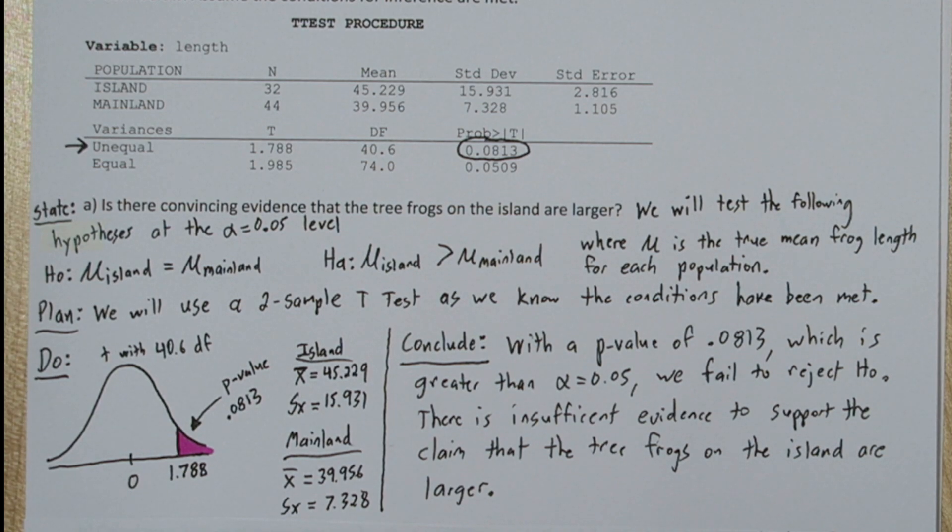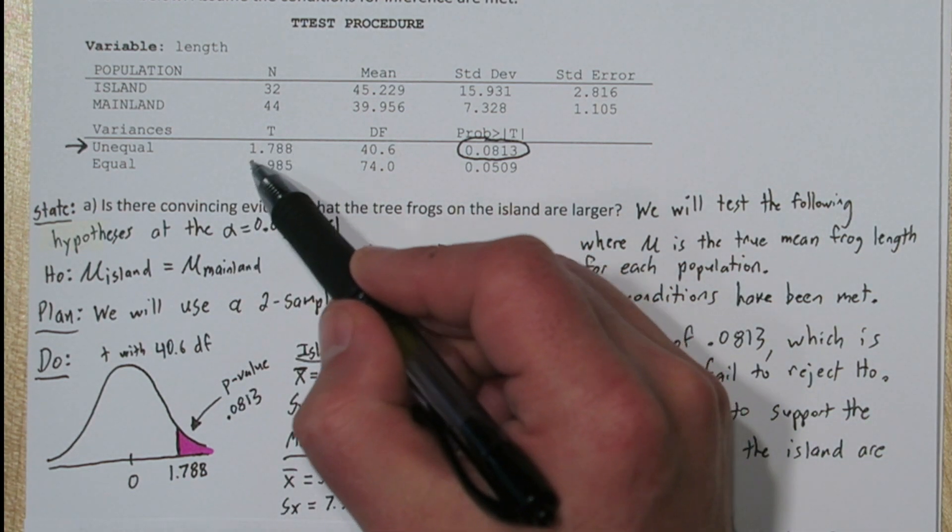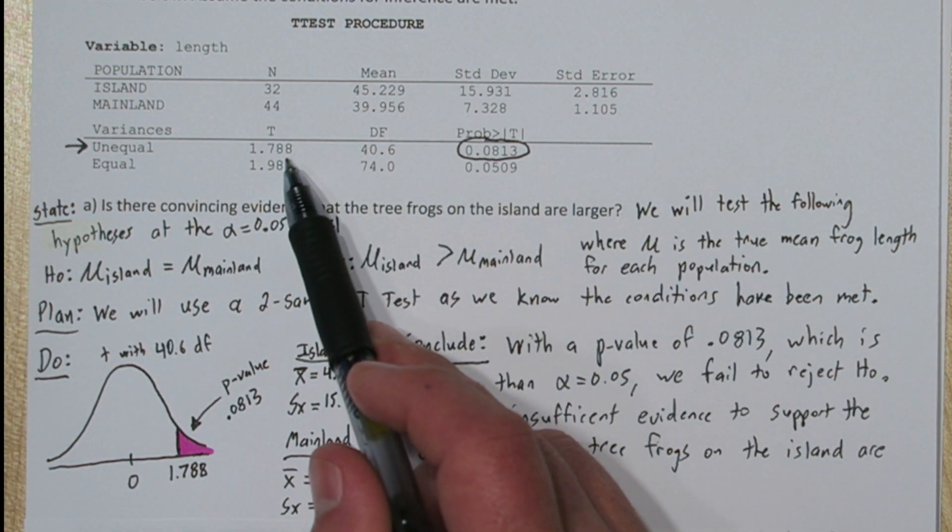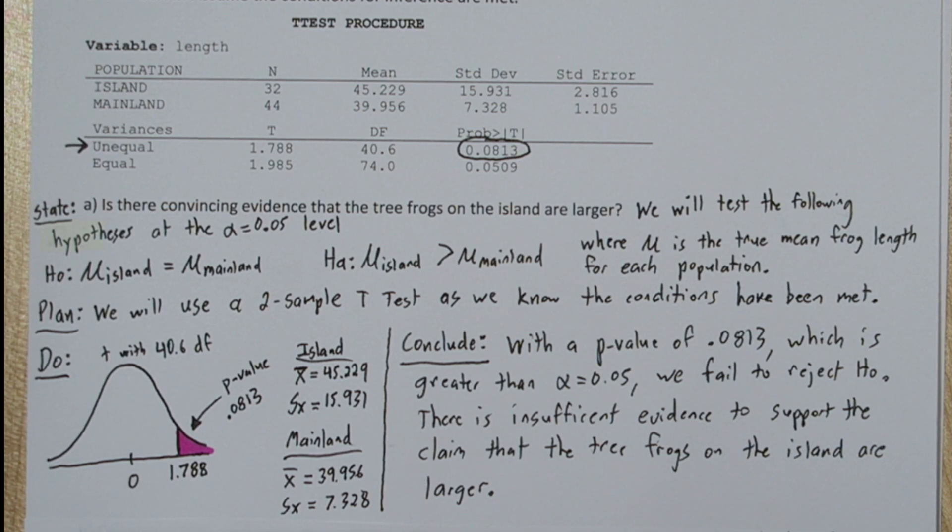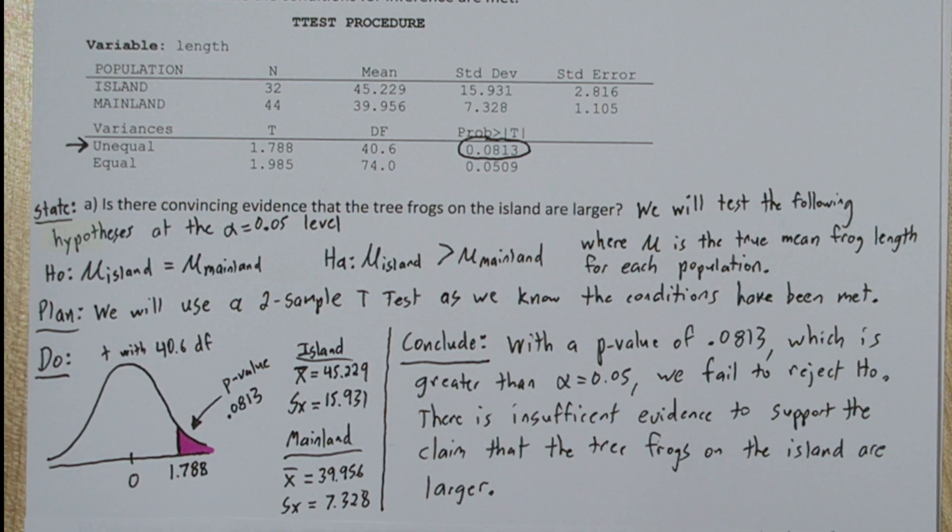Before we finish, one word of caution. Often when students are trying to calculate T star for a confidence interval, they use the T from the output. This is not the right T to use. This is our test statistic from the significance test. You have to calculate T star using inverse T for whatever confidence level you want.